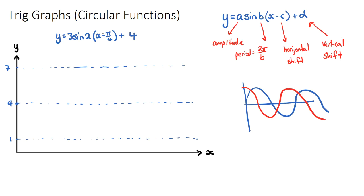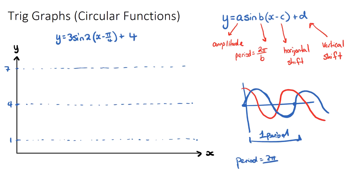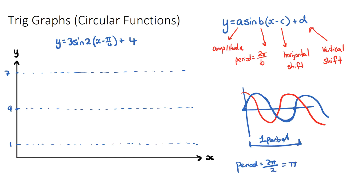Now I want to look at the b value of two. This is to do with how skinny or wide our function is. The period of a circular function is two pi on b. So with b equal to two, our period is two pi on two, which is pi. I'll mark pi on my x-axis and draw the function across two full periods.